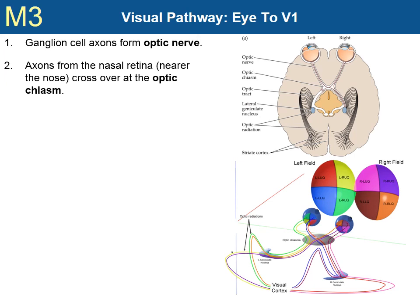Next, axons from the nasal retina cross to the opposite side of the brain. The red and blue fibers of the left eye cross over to the right side, and the purple and tan fibers of the right eye cross over to the left side. However, axons from the temporal retinas — the yellow and green of the left eye and the magenta and brown of the right eye — do not cross over. Notice what effect this has: stimuli in the right half of the visual world, represented by the yellow, green, purple, and tan areas, are seen by the left side of the brain, whereas stimuli in the left half, represented by the red, blue, magenta, and brown areas, are seen by the right side of the brain.